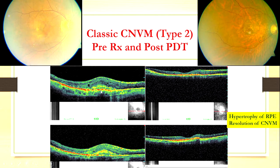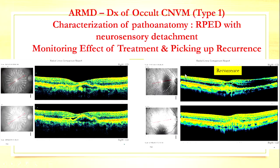Now let's see the follow-up. What happened? This patient was treated by PDT. See what happened — the entire lesion vanished. So you know your lesion has responded very well to your treatment. The OCT will tell you how your patient is responding. But there is a little bit of hypertrophy left as a consequence.